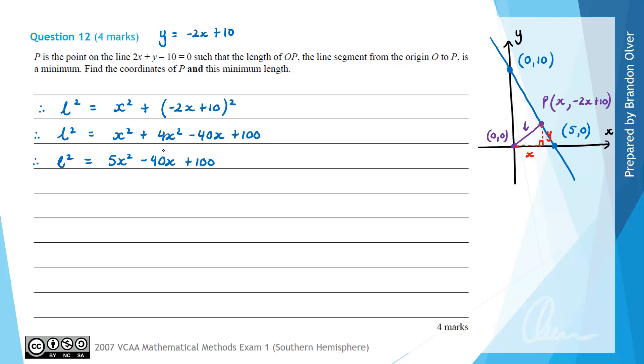So L, of course, would be the square root of that expression. But if we have the square root of that expression, the minimum is just when that quadratic is also a minimum. So we're going to calculate d/dx, the derivative of 5x squared minus 40x plus 100. And that's going to equal 10x minus 40. And then we're going to set the derivative, which is 10x minus 40 equal to 0.